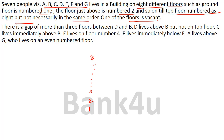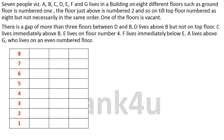Out of these 8 floors, one floor is vacant. So 8 floors are there, 7 persons are there, and one floor is vacant. We need to find out which of these 7 persons will be living on which floors and which one floor is vacant. The first clue is: there is a gap of more than 3 floors between D and B. More than 3 means it has to be minimum 4 — 4 or more floors must be there between D and B.